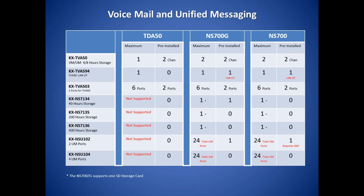The NS700 and the NS700G support the existing TVA voicemails if needed. The NS700 and the NS700G's unified messaging is in-skin — inside the cabinet. Unified messaging programming is done from the same interface as the PBX. The NS700 and the NS700G also support more ports and storage hours than the TVA50. Unified messaging channels are added via license activation keys. The NS700G comes with two ports and 40 hours of voicemail storage pre-installed, while the NS700 comes with two channels of simplified voicemail. To activate the unified messaging features, a DSP card and a storage card must be added to the NS700.